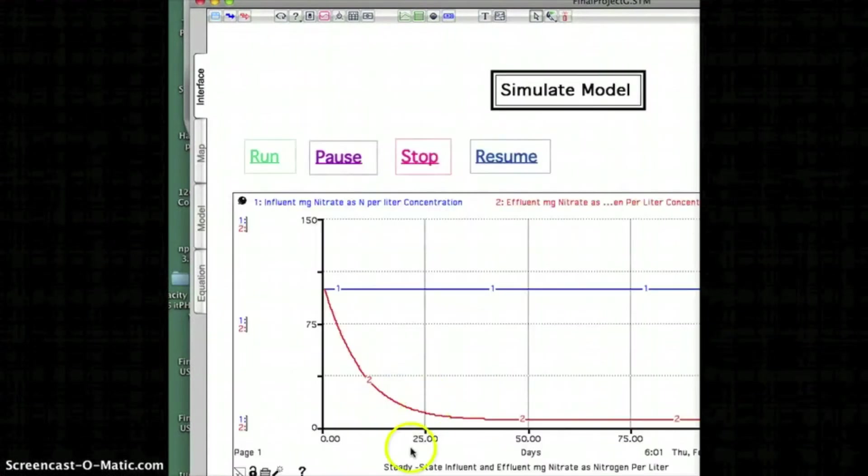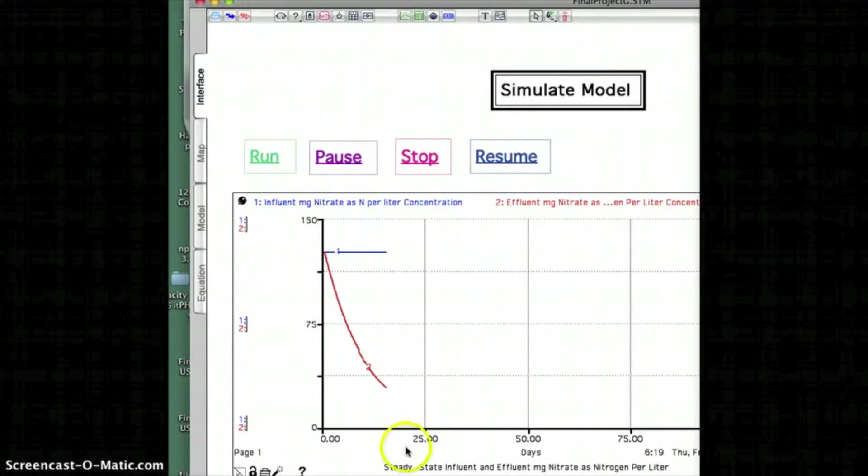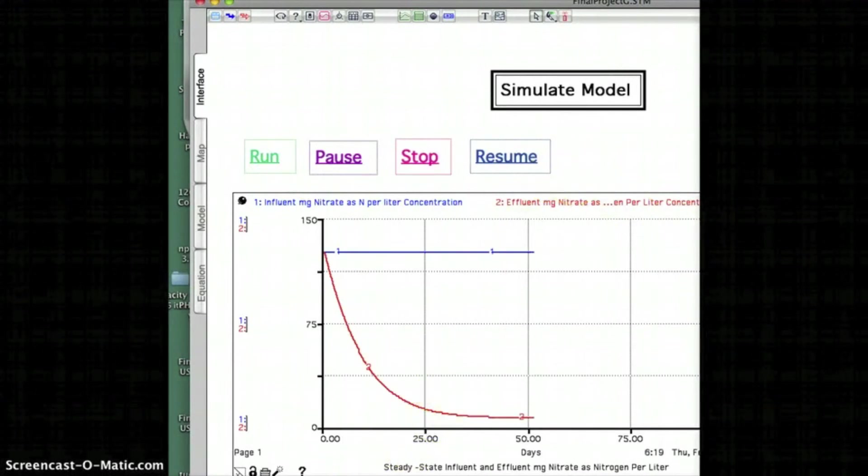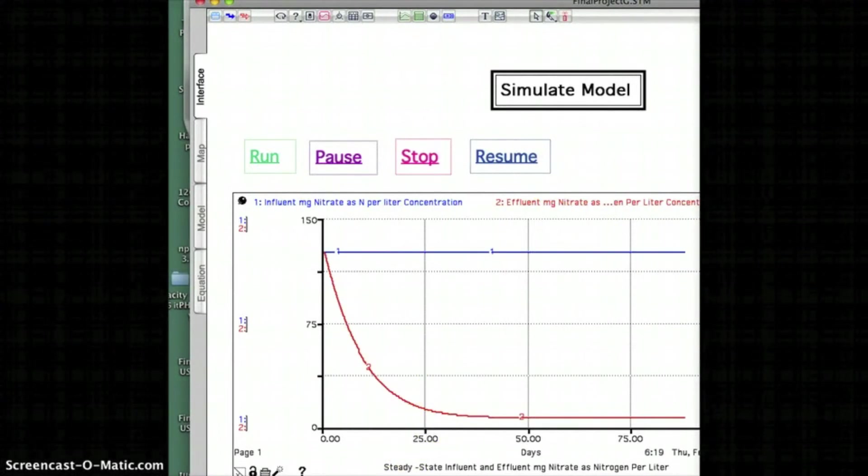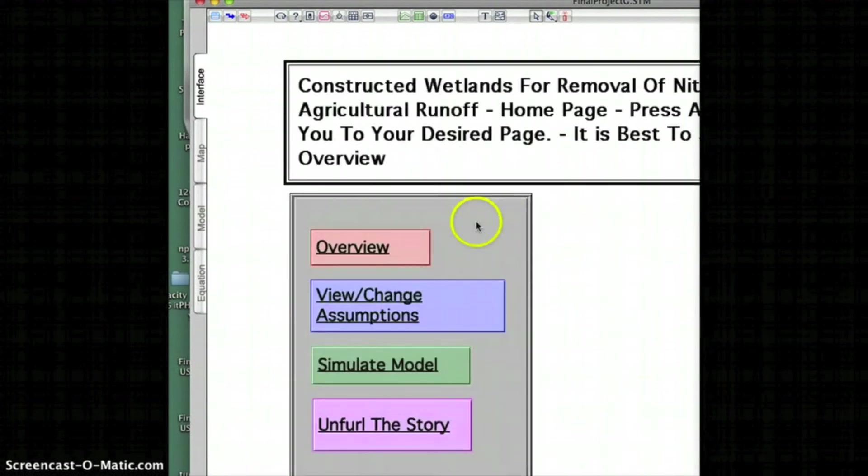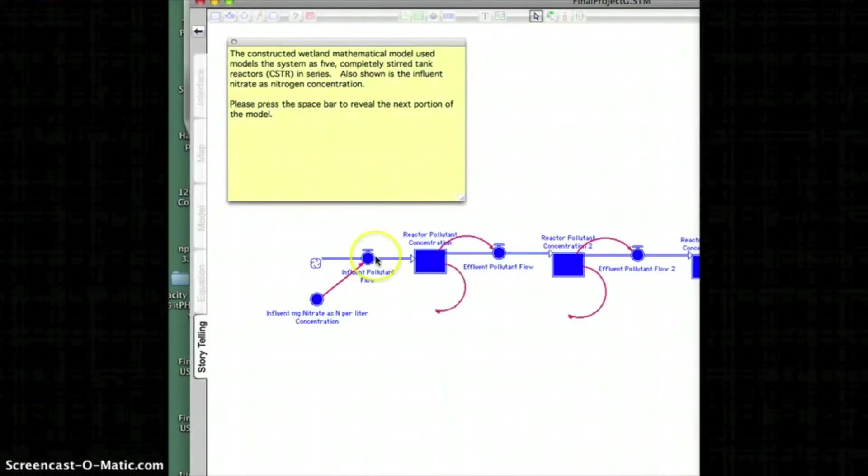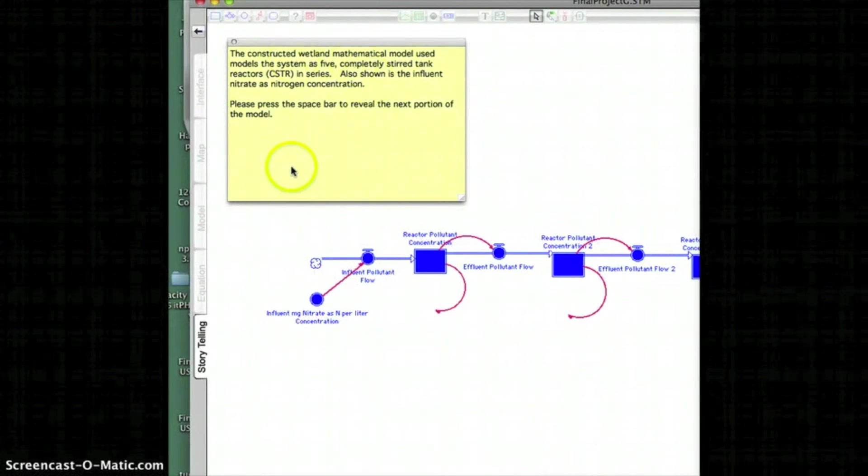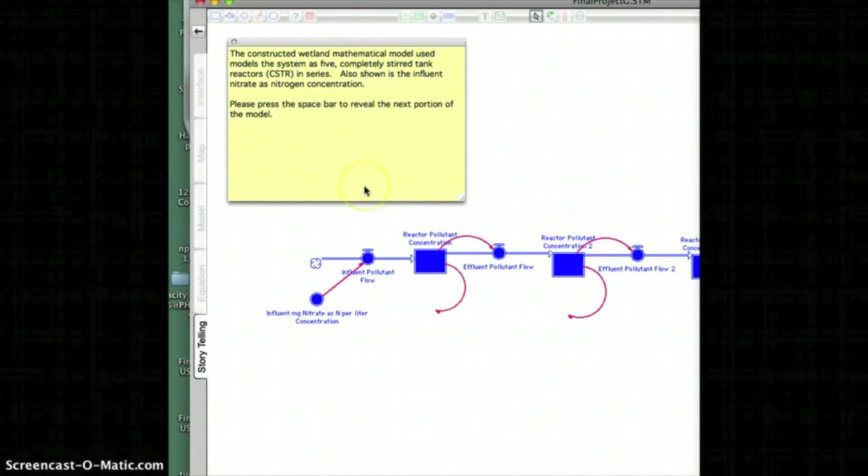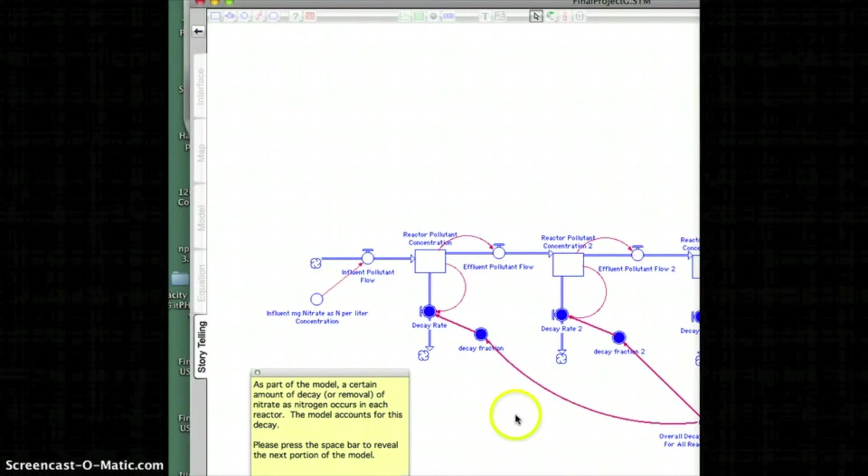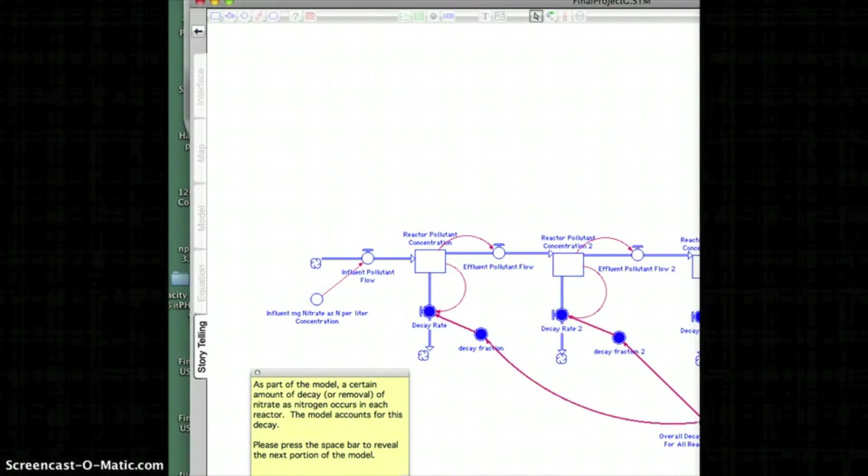And then there's the actual model itself, and so then you can click the button and you can run the model. And then finally, there's a button that allows you to explain the model. So again, here's some text that explains it, and if I hit the spacebar, I can reveal the various parts of the model and show the reader or the user exactly how the model works.